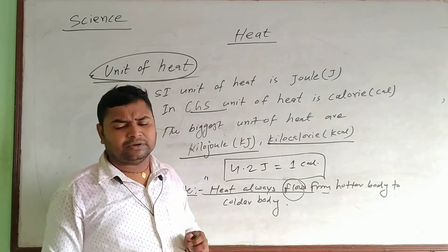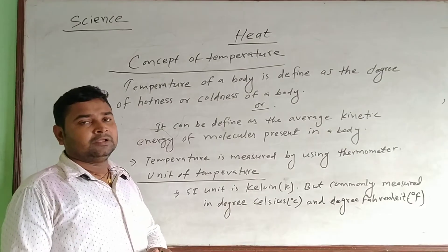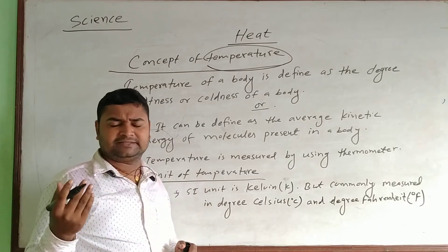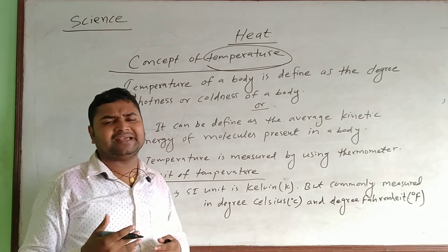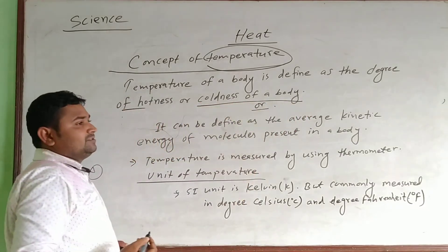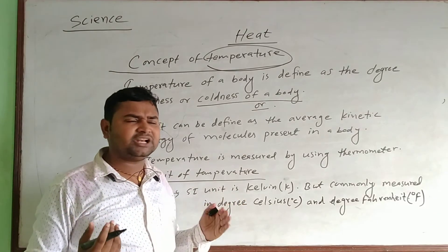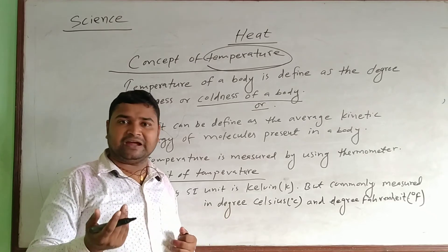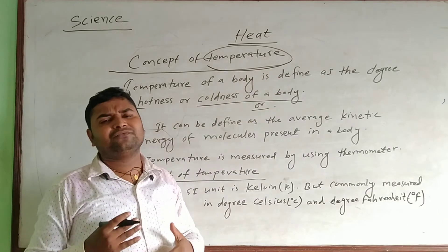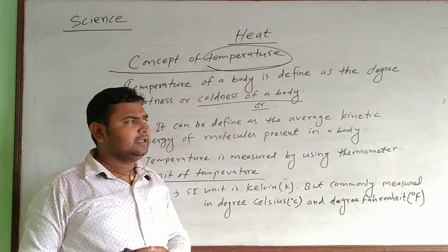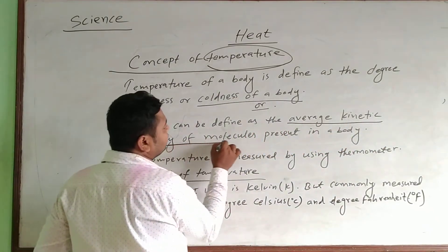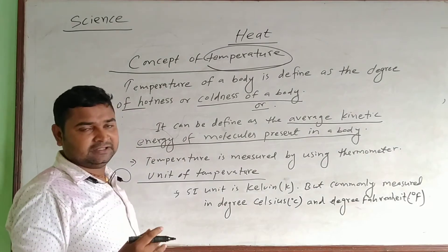Now let's talk about the concept of temperature. What is temperature? Generally, temperature can be defined as the degree of hotness and coldness of the body. We can say 25 degrees — that is a temperature. Temperature can also be defined as the average kinetic energy of the molecules present in the body. That average kinetic energy is called temperature.